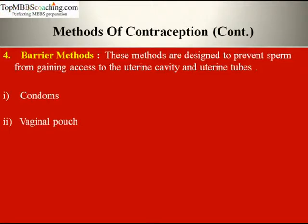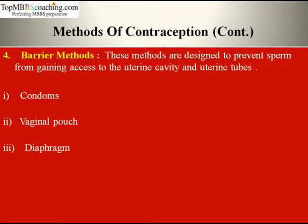Next is the vaginal pouch, also called a female condom, which is made of two flexible rings connected by a polyethylene sheet. One ring lies inside and is inserted to fit over the cervix; the other ring remains outside the vagina and covers the female external genitals. Next is the diaphragm — a rubber dome-shaped structure that fits over the cervix and is used together with a spermicide. It stops sperm from passing into the cervix, while the chemicals kill the sperm cells.